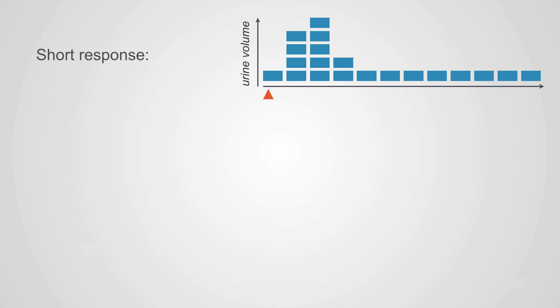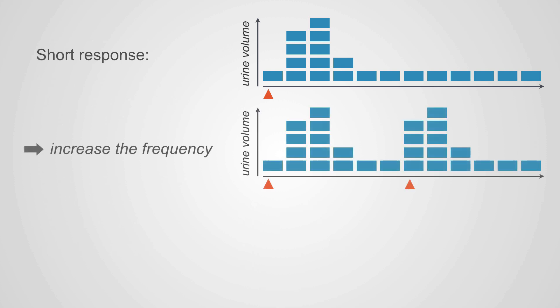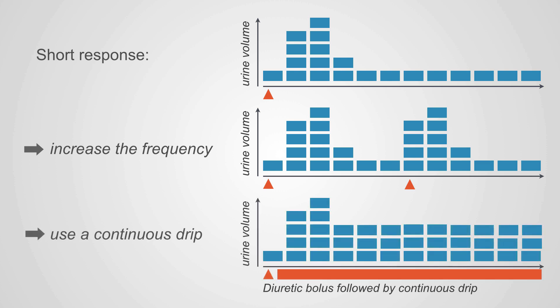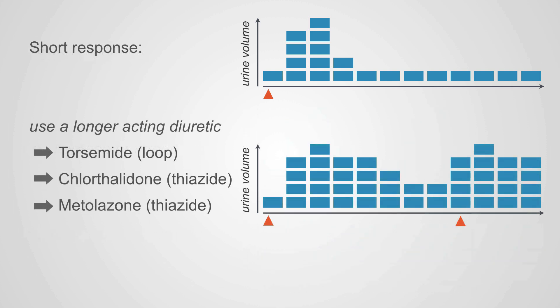If you have a short response, you want to increase the frequency that you give the drug, and that could overcome the short response. You can even use a continuous drip or switch to a longer-acting diuretic to overcome this. This is typical of the diuretic failure we see in heart failure, liver failure, and nephrotic syndrome — and usually increasing the frequency is your best bet there.